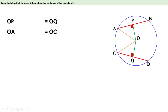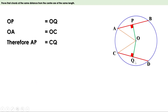That means in these two right-angle triangles, the hypotenuses are equal and one more side — the altitude — is also equal. Then definitely the third sides, or the bases, are equal. Because in every right-angle triangle, base equals the square root of (hypotenuse squared minus altitude squared). If hypotenuse and altitudes are equal, then the bases are also equal. Therefore we can say AP equals CQ.